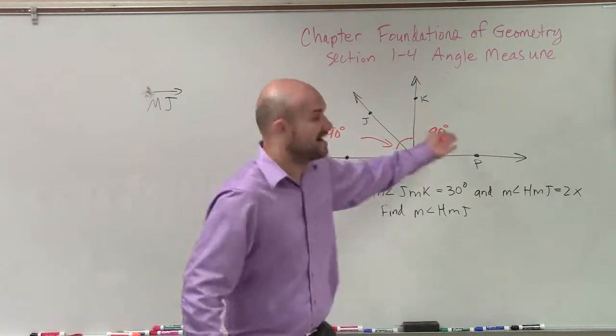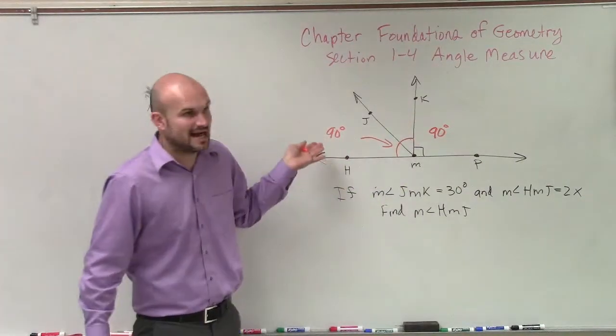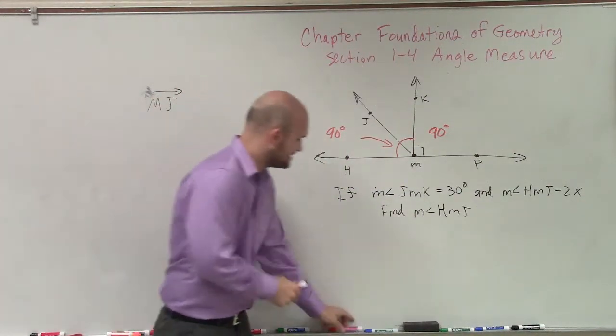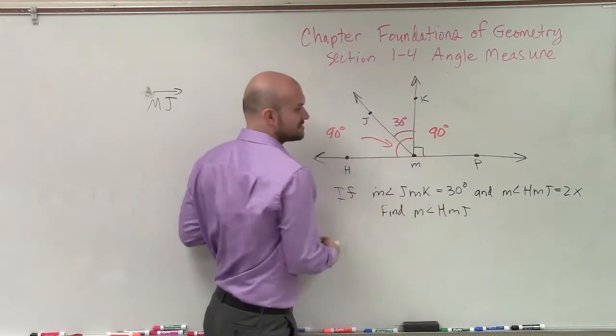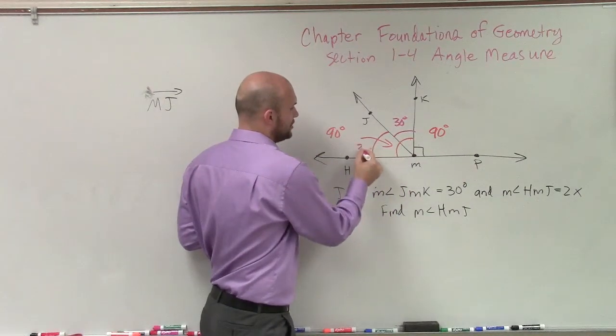So, if one side is 90, this has to be 90. Then we say that over here, this angle is 30 degrees, right? And this angle is 2x.